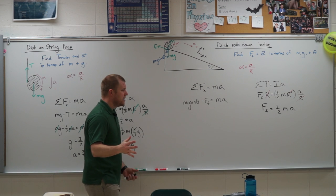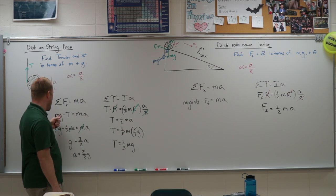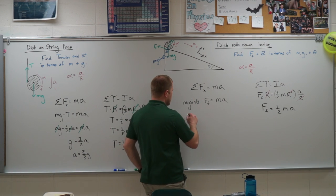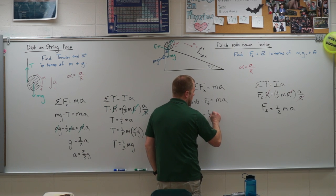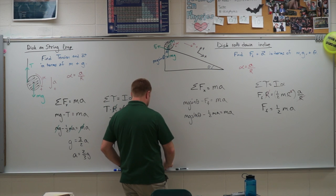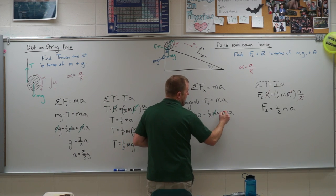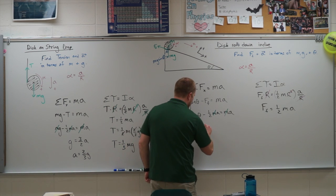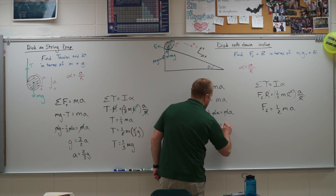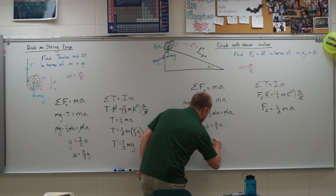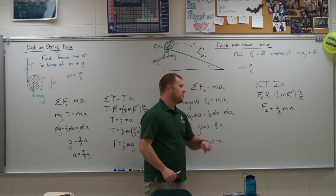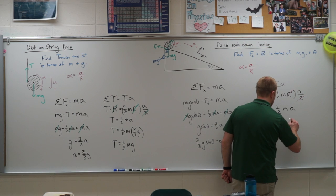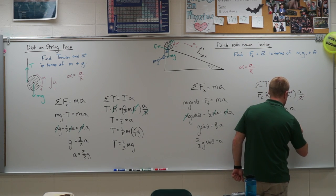All the R's cancel again because the connecting radius and the radius of the object are the same. So the force of friction equals one-half MA - notice the similarity to tension equals one-half MA from before. Substituting into the linear equation: MG sine theta minus one-half MA equals MA. The masses cancel, giving G sine theta equals three-halves A, and therefore the acceleration equals two-thirds G sine theta. Substituting back, the force of friction equals one-third MG sine theta.